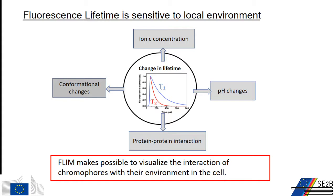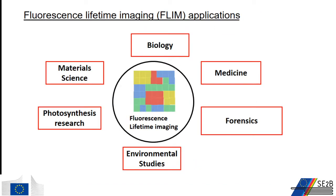The excited state decay kinetics of a molecule are sensitive to its local environment. An energy transfer between the excited state molecule and its environment changes the fluorescence lifetime of the molecule. This way, fluorescence lifetime imaging provides information about photophysical processes which are very difficult or even impossible to observe with fluorescence intensity imaging. FLIM is often used to map parameters such as ionic concentrations, pH variations, and interactions between proteins within the cell and conformational changes in proteins. This technique is widely used across various disciplines ranging from material science to forensics and environmental sciences and many more.